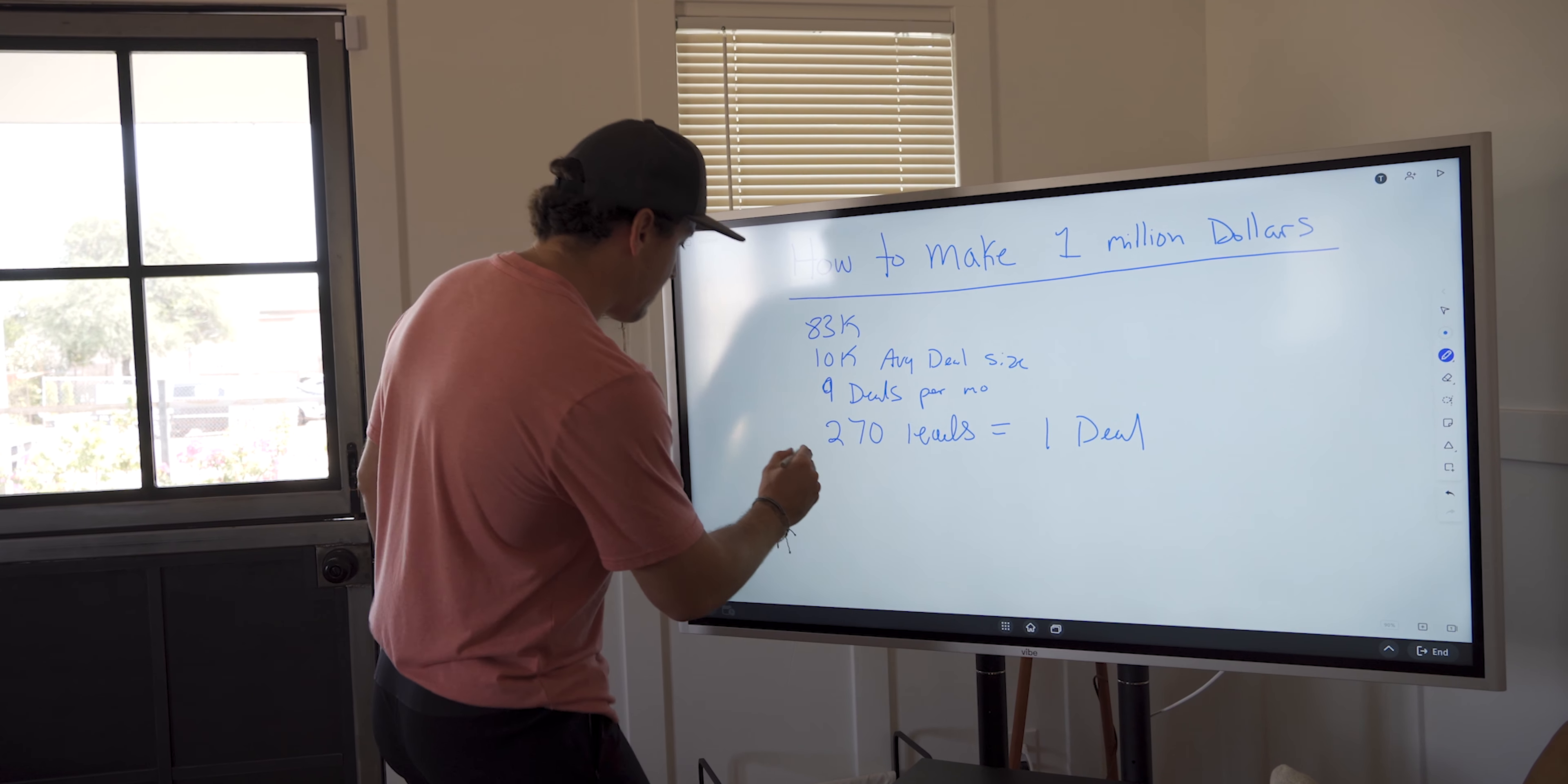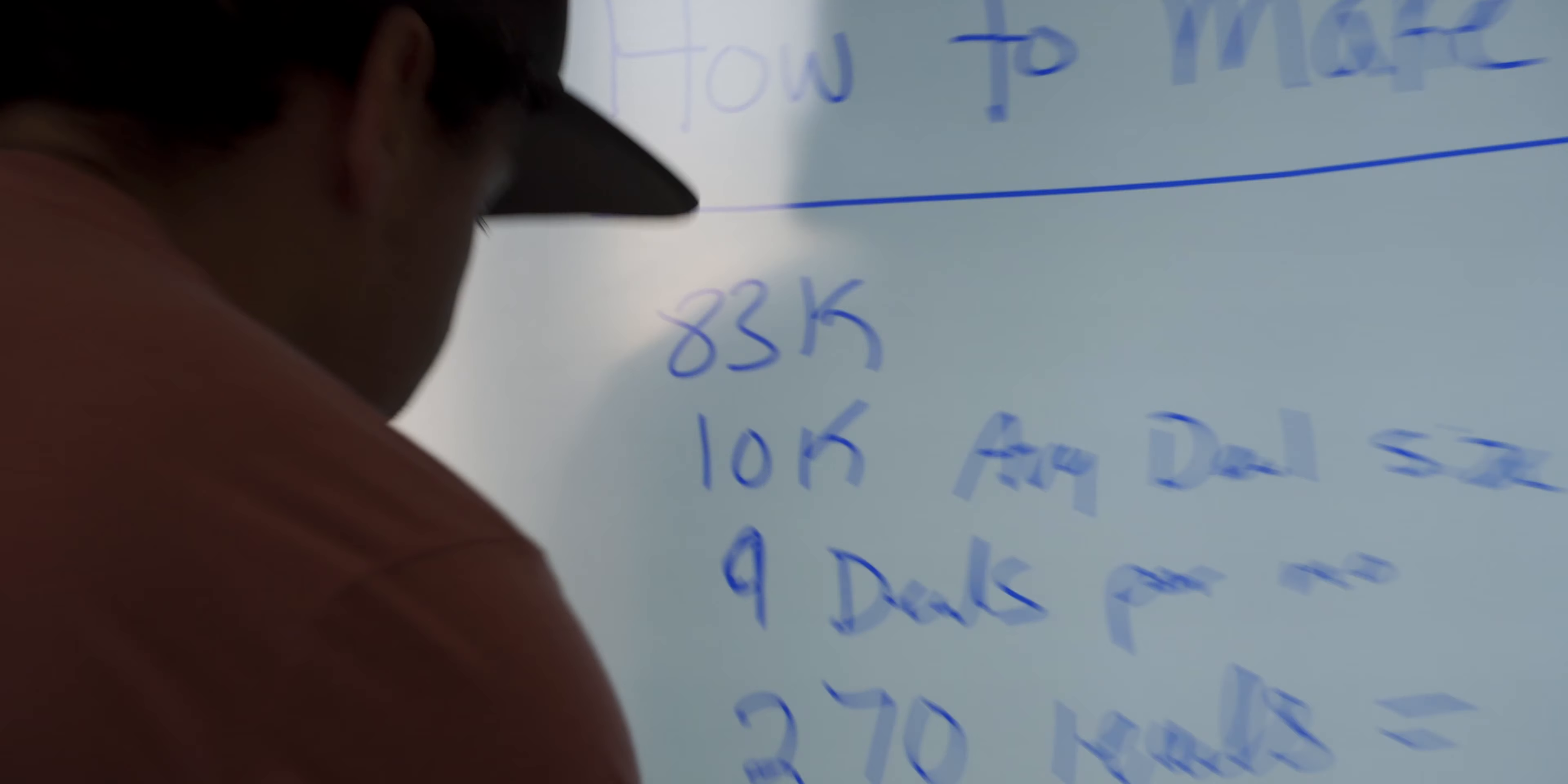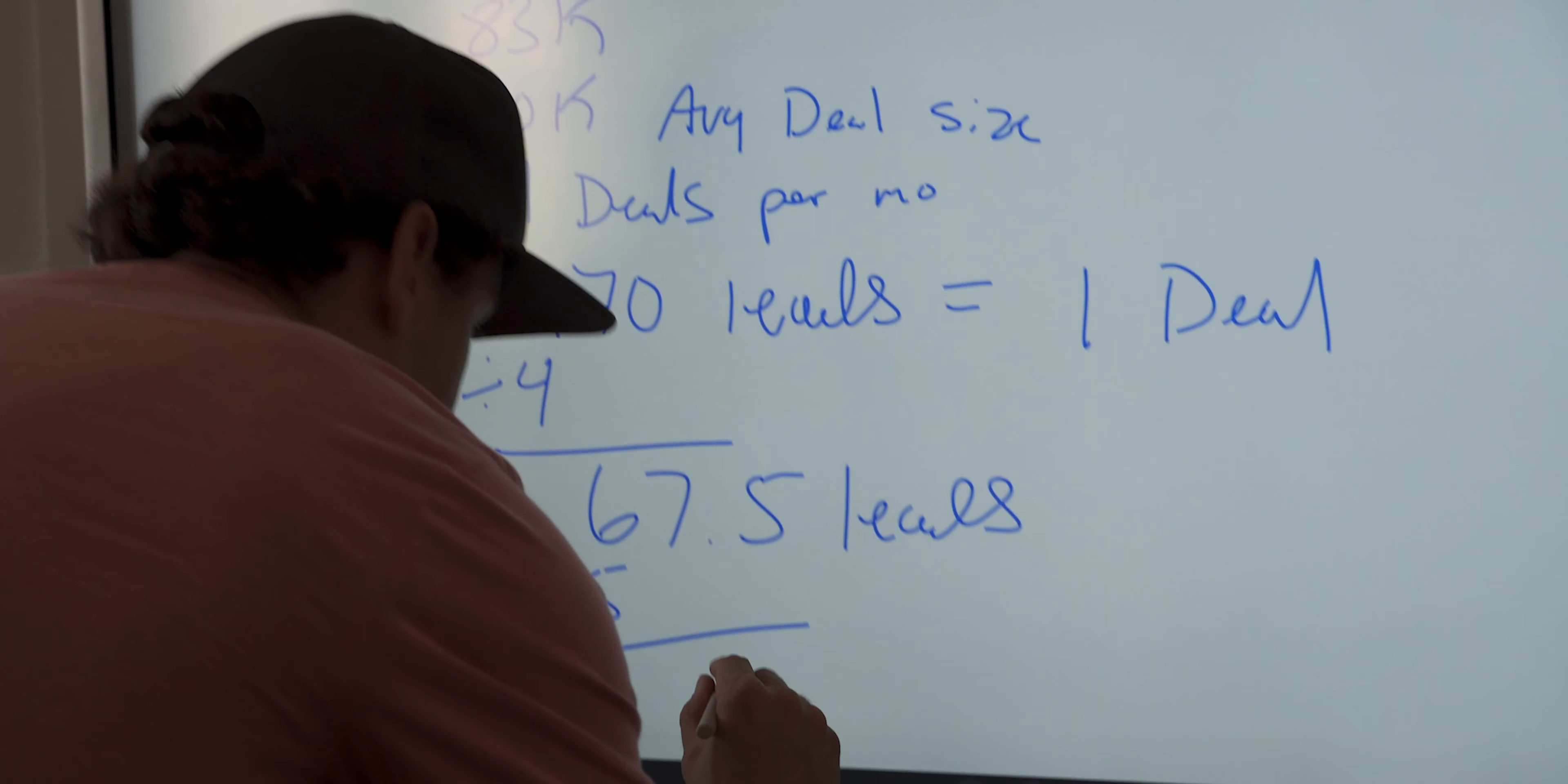So let's divide that by four. Cole, Cole's behind the camera guys. I know this is simple enough math, but we're going to do 270 divided by four. I need 67.5 leads a week. And then I want to divide that by five. And I need 13.5 leads per day.